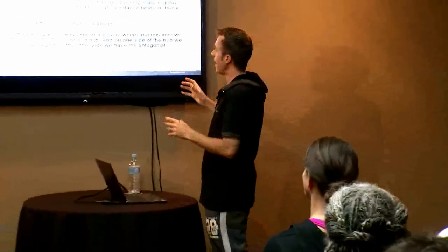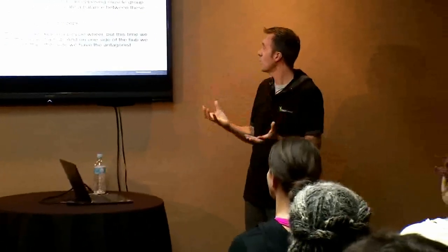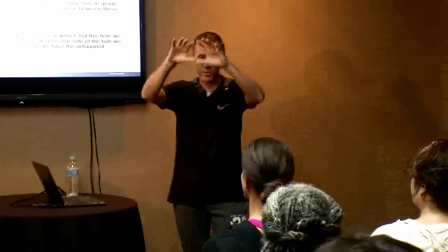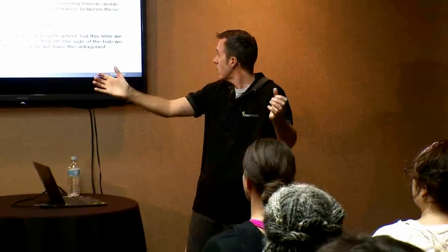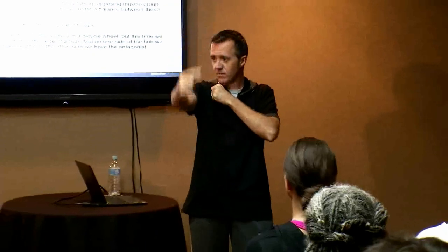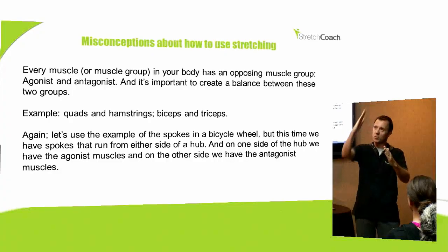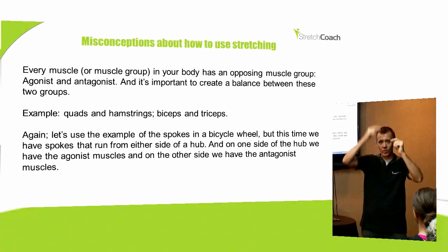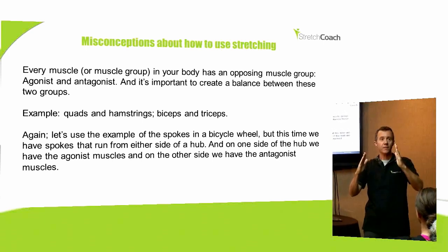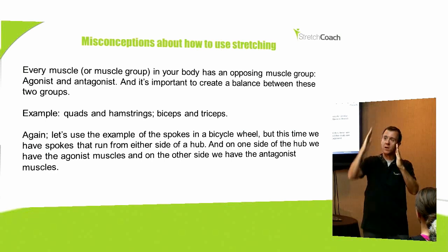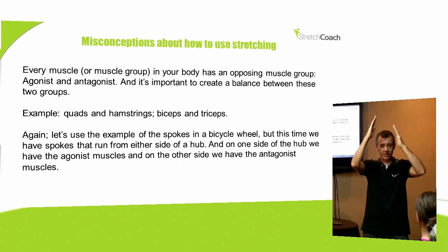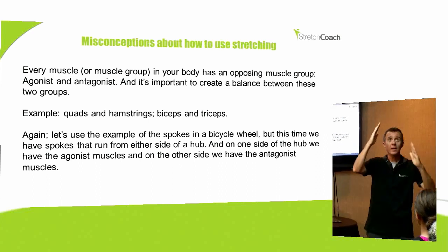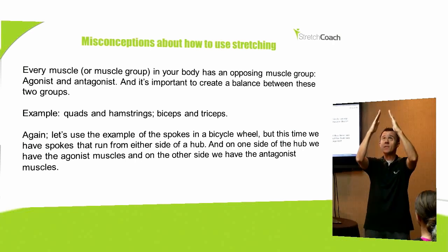Let's look at the example of the spokes in a bicycle wheel. So let's turn that bicycle wheel around so that it runs. You've got this hub in the middle and the spokes go off the hub up to the rim of the wheel. If you can imagine this side of the spokes is the agonist and this side of the wheel is the antagonist — so this side might be the quadriceps and this side might be the hamstrings. When they're in balance, the wheel runs nice and smoothly.